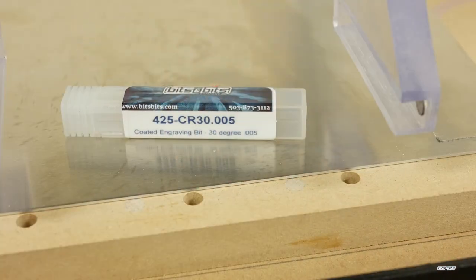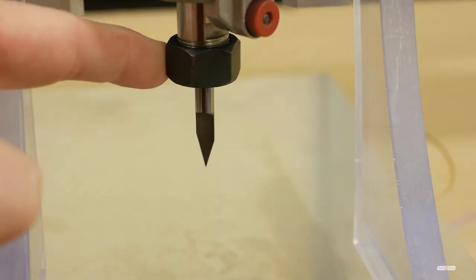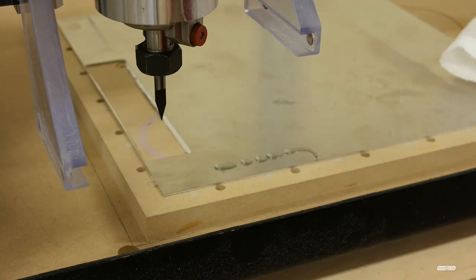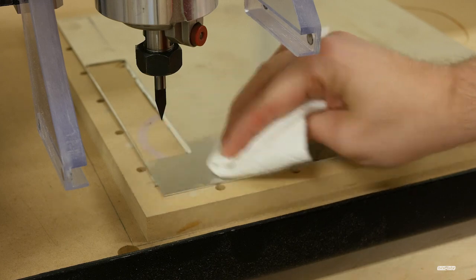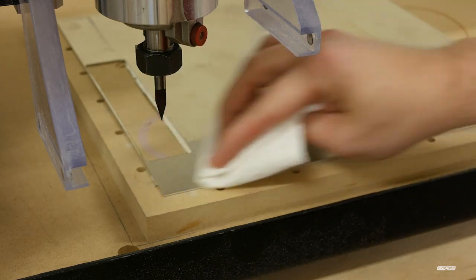First up is our 30-degree V-bit to mark the lines as well as the numbers. Before cutting, I put a little bit of 3-in-1 oil on the aluminum to help keep the bit cool and to maximize its life.